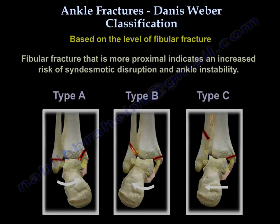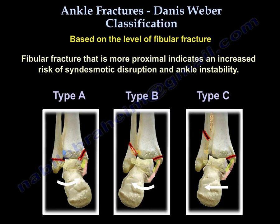Ankle Fractures. The Dennis Weber classification is based on the level of the fibular fracture. A fibular fracture that is more proximal indicates an increased risk of syndesmotic disruption and ankle instability. There are three types: Type A, Type B, and Type C.